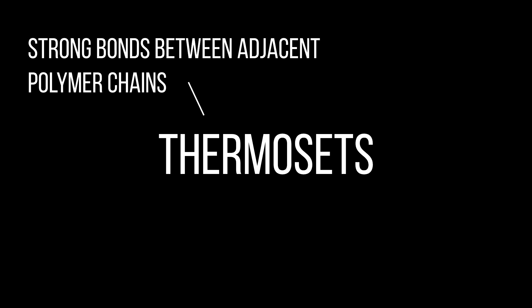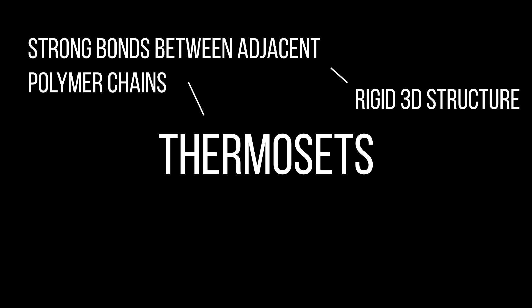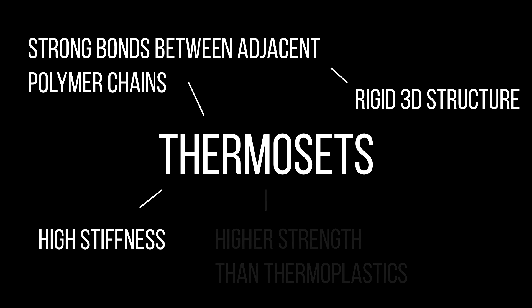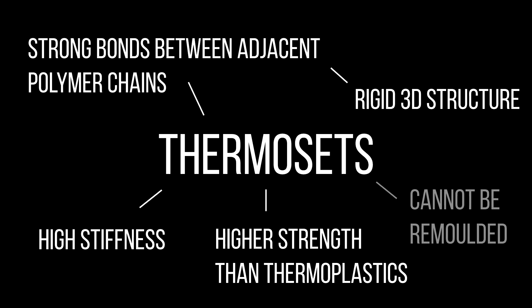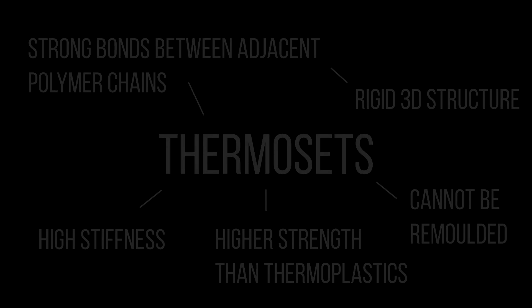Now, let's look at the structure of thermosetting plastics. Thermosetting plastics are linear chain molecules with strong primary bonds between adjacent polymer chains, which gives thermosets a rigid three-dimensional structure. General properties of thermosetting plastics are that they have high stiffness, have higher strength than thermoplastics, and cannot be reheated or remolded, as thermoplastics would be.